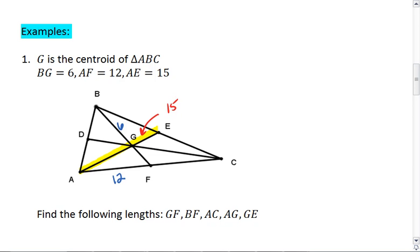Okay, since we have a centroid, first of all, that means that these points on the sides are all midpoints. If AF is 12, then FC is also 12, meaning that AC is 24.